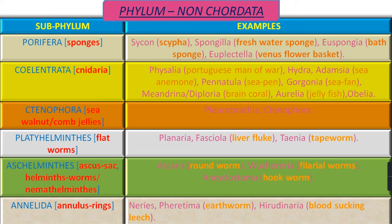Sub-phylum Cylentrata — animals of this sub-phylum are commonly known as Cnidaria. Examples are: Physalia as Portugese Man of War, Hydra, Adamsia as Sea Anemone, Pennatula as Sea Pen, Gorgonia known as Sea Fan, Meandrina or Diploria both as Brain Coral.